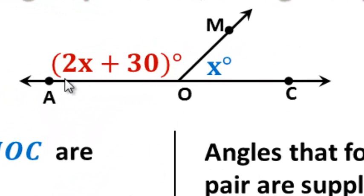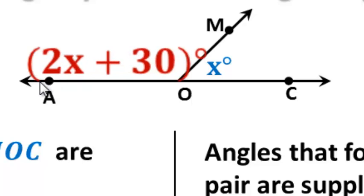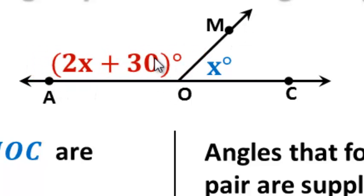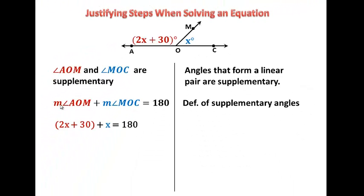Now, going back to our original diagram, angle AOM has the expression 2X plus 30, and angle MOC has an X. So we need to substitute, and instead of putting this, we're going to put the expression instead. So instead of this information here, we're going to substitute and put an X instead, and that's just the substitution property.